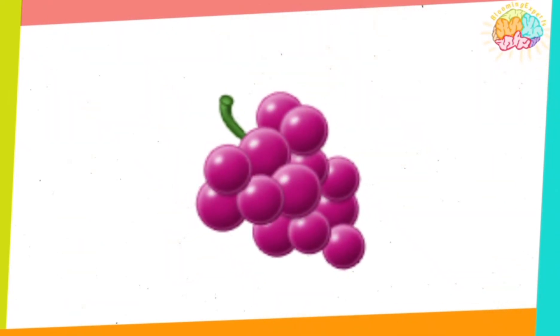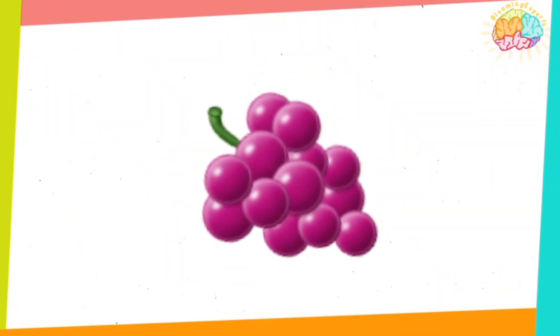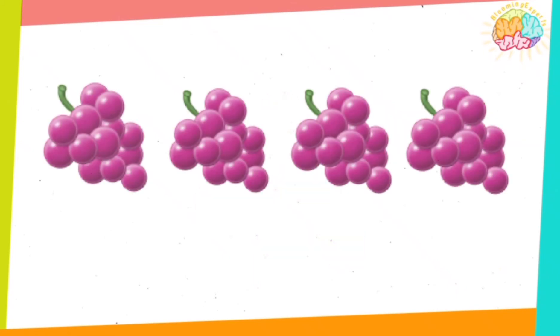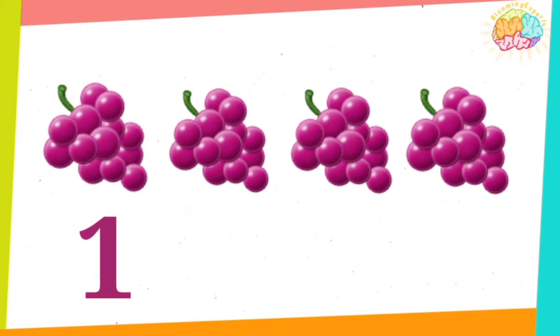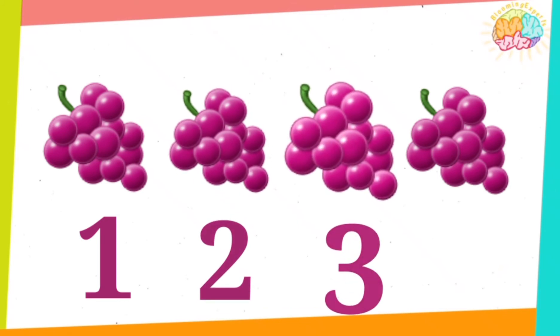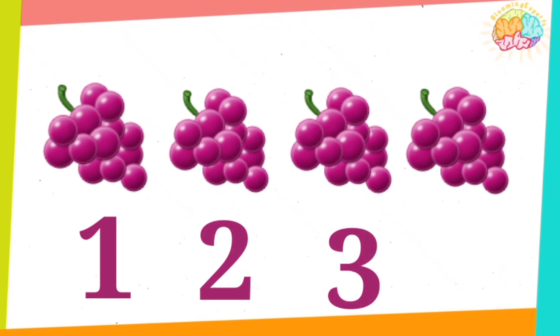This is a bunch of grapes. Grapes. How many bunches of grapes do we have? Let's count. One, two, three, four bunches of grapes. Mmm.